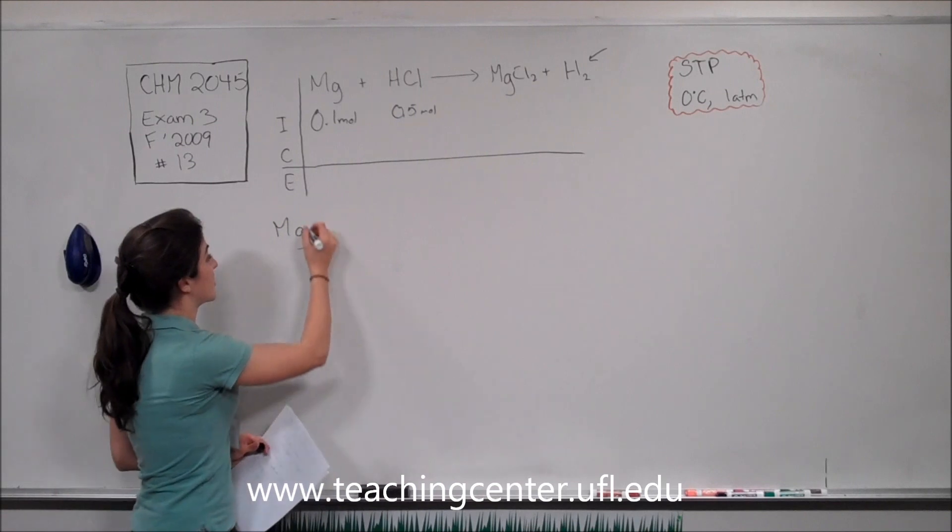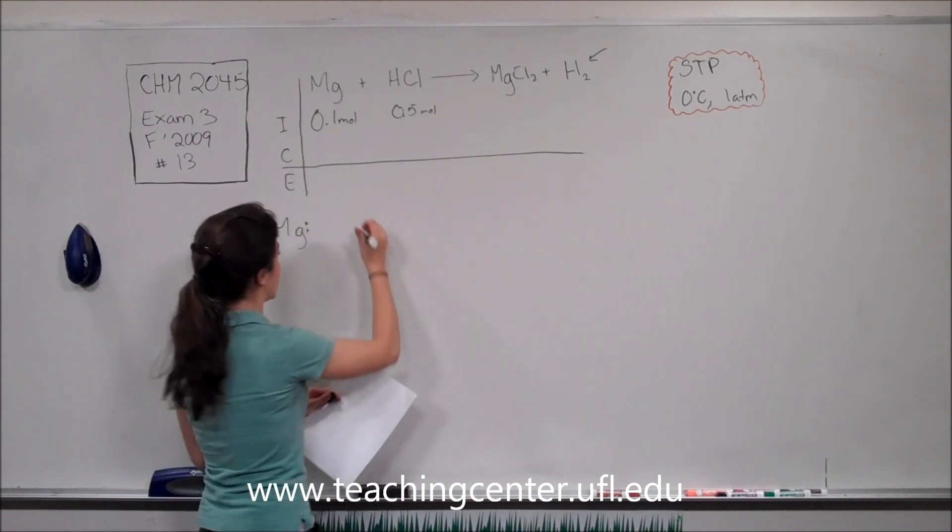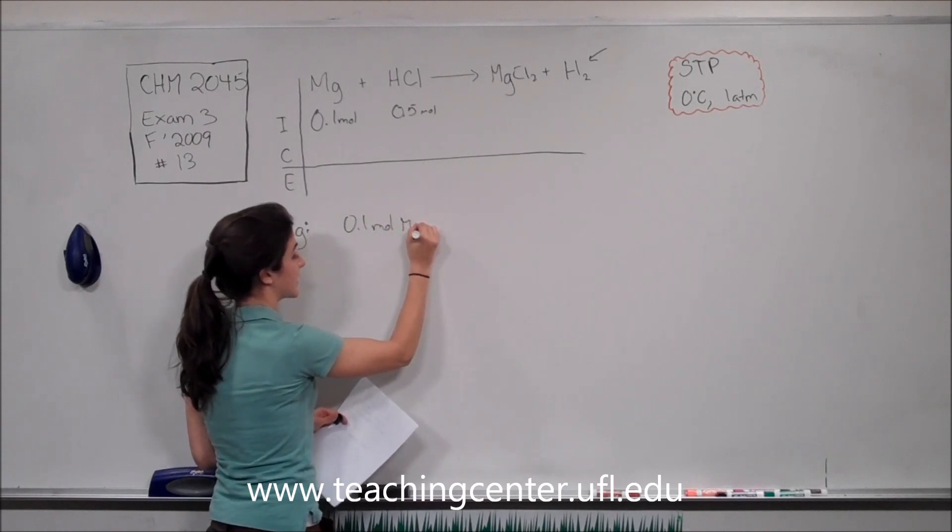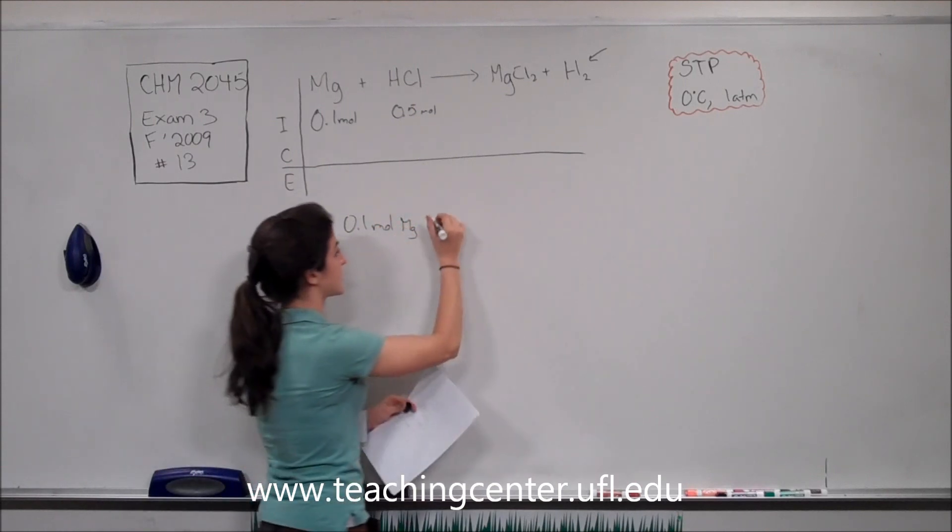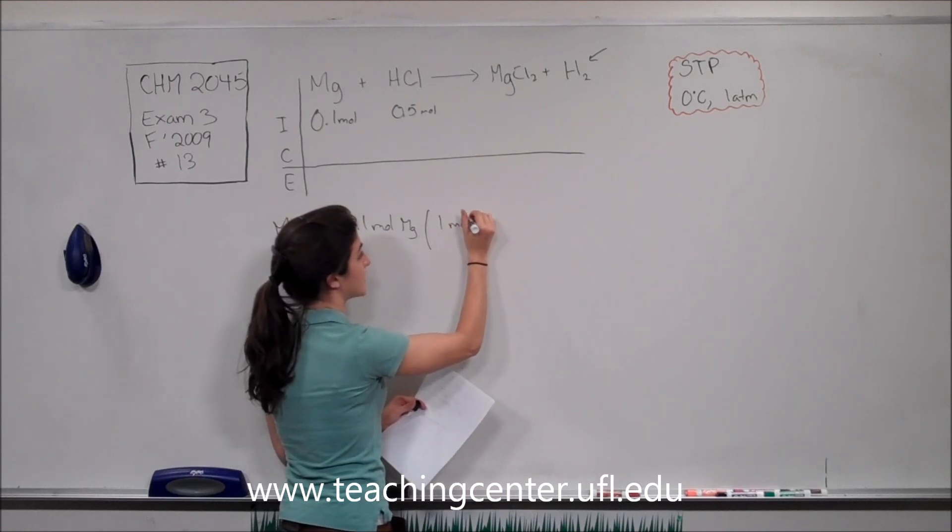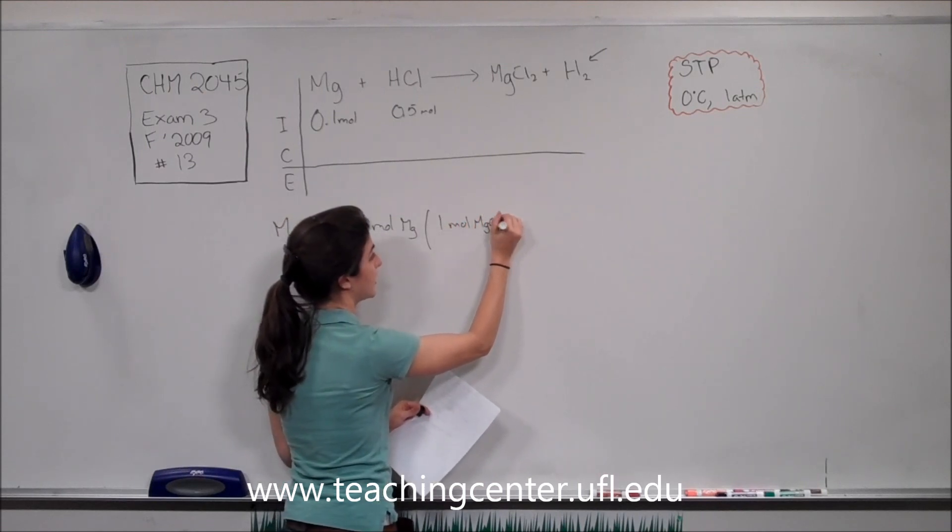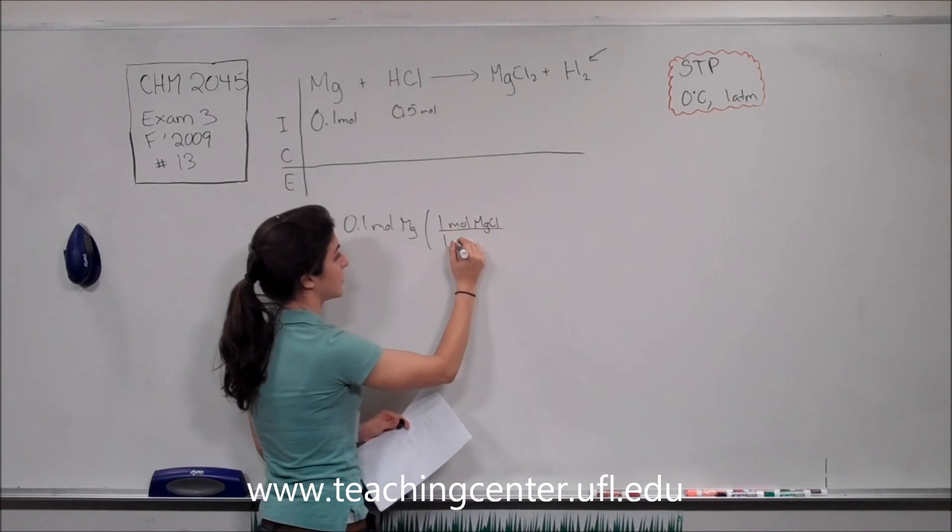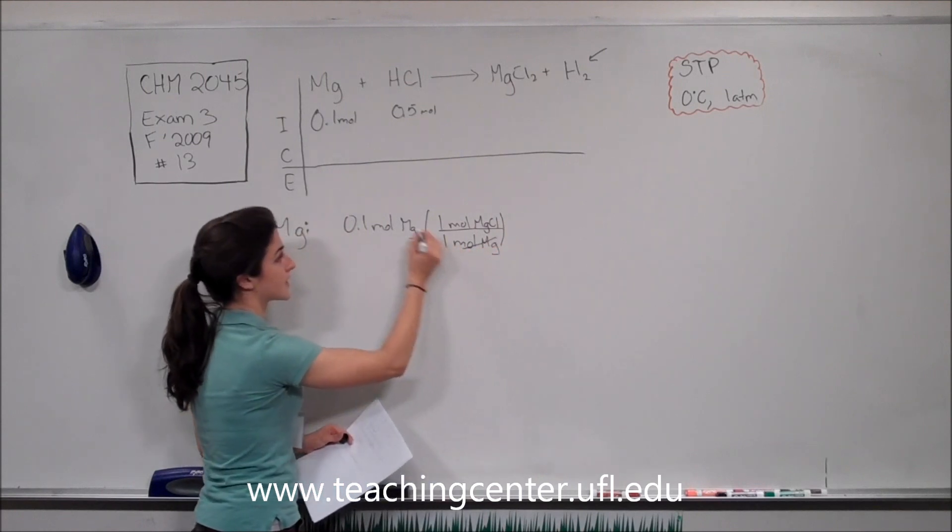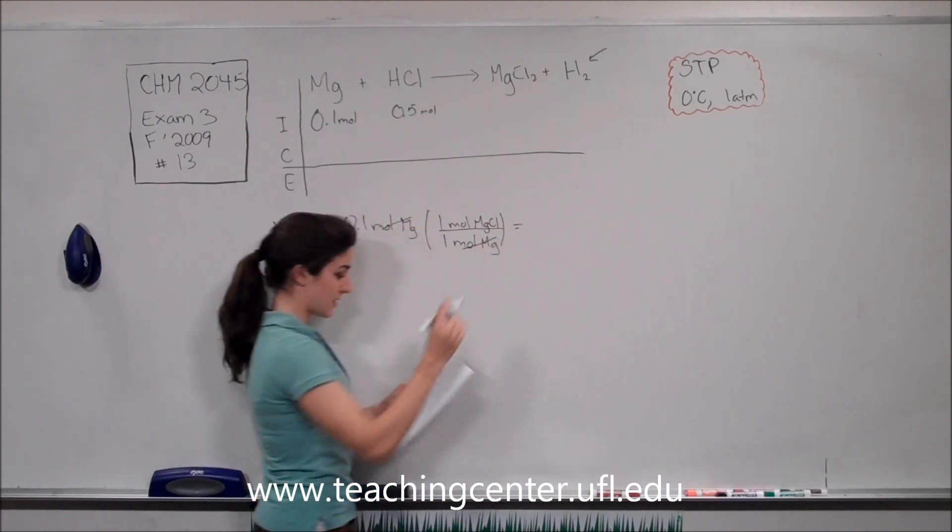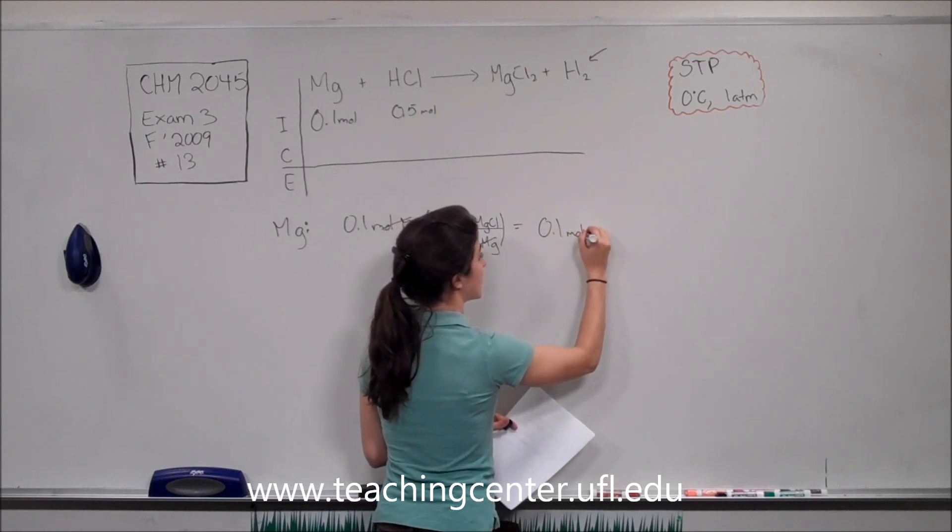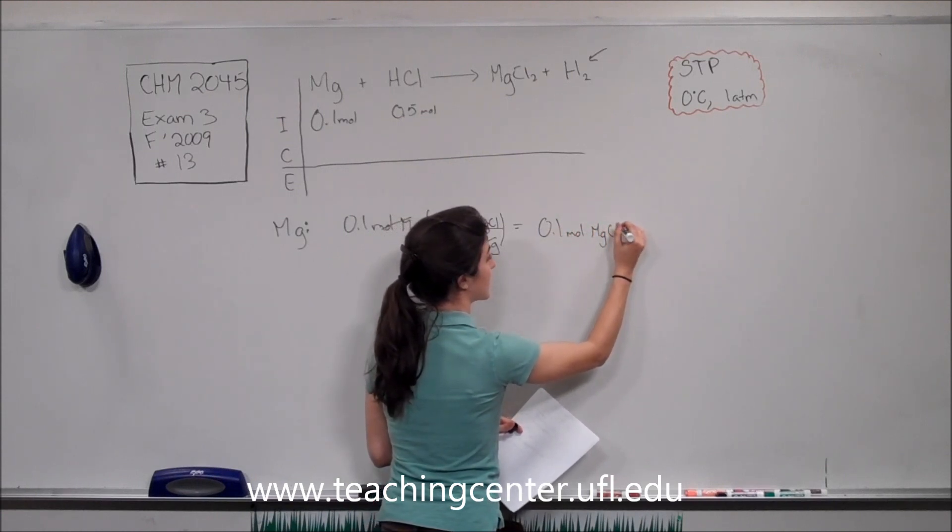So going to magnesium, we have 0.1 moles of magnesium, and that's converted to 1 mole equivalent of magnesium chloride for every 1 mole of magnesium that's used. So 0.1 moles of magnesium chloride.